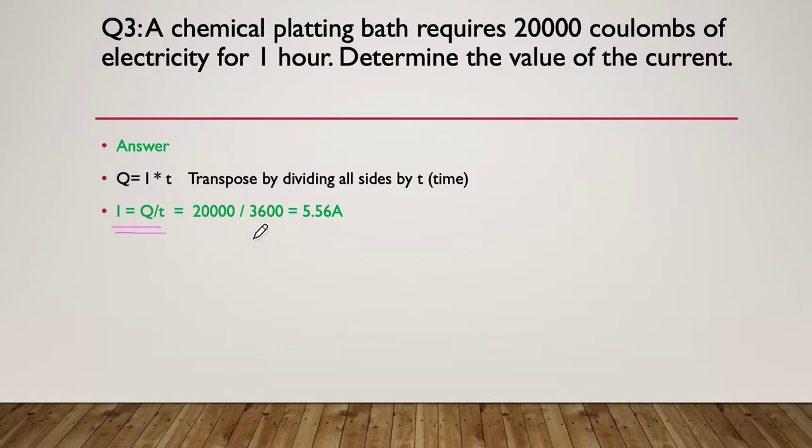This one here, I equals Q divided by T. So we take our 20,000, we divide it by 3600 because we were running for one hour and there are 3600 seconds. So that works out that we would need to provide 5.56 amps for that one hour to produce our 20,000 coulomb.